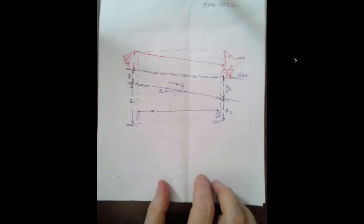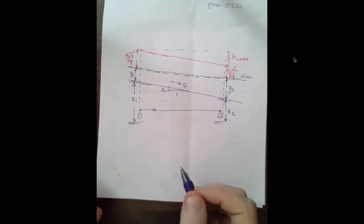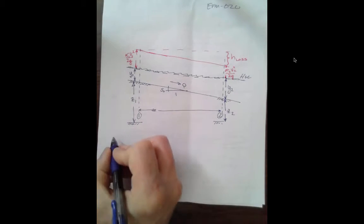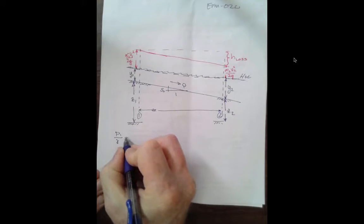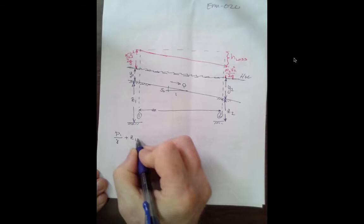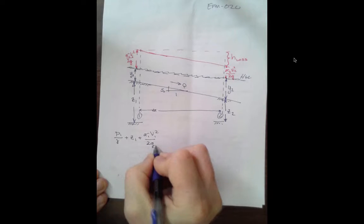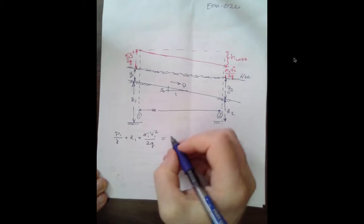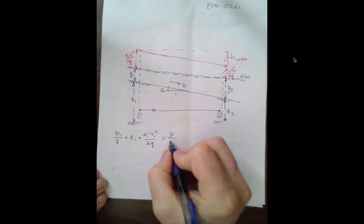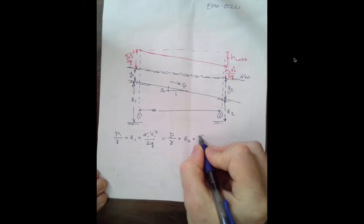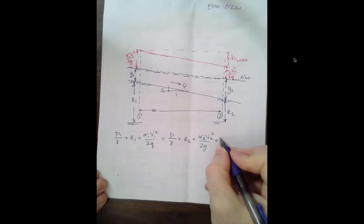All right, with this definition, we can come up with a modified Bernoulli equation. Again, without proof, we'll simply write it that p1 over gamma plus z1 plus alpha 1 v1 squared over 2g, we'll not worry about pumps and turbines just yet, is equal to p2 over gamma plus z2 plus alpha 2 v2 squared over 2g plus the head loss.